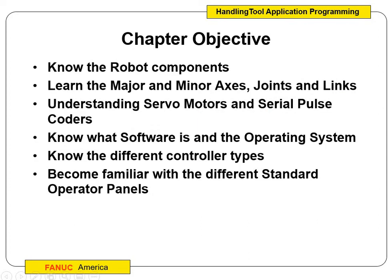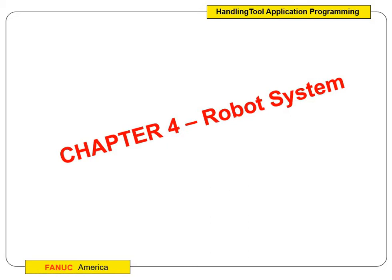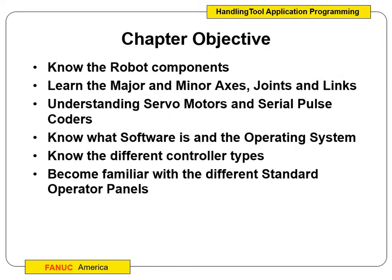All right, so we are at lecture two. We're going to go over chapter four in our FANUC book. We're going to cover what the robot system entails. As we go through, we'll walk around the classroom and talk about this stuff as well, so this is for our online learning piece. What we're going to come out of this knowing, hopefully, is just the basic components of the six-axis robot.